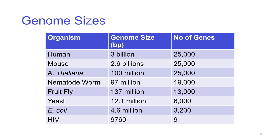Nematode worms have 19,000 genes, so there's only a change of about 6,000. What humans, mice, and Arabidopsis have in common is they're higher-level eukaryotes — they have multiple tissue types and a complex life structure. Plants have different responses to different environmental conditions, and mice and humans have complicated biochemistry and immunology. They have characteristic sets of genes specific to those lineages, and are much more complicated than the simplest eukaryotes like yeast, which has about 6,000 genes.